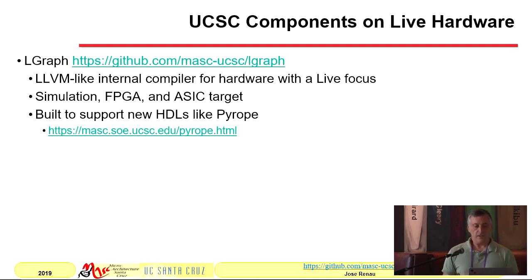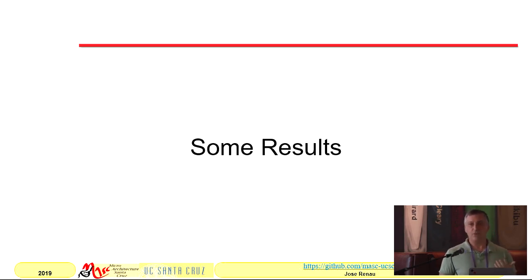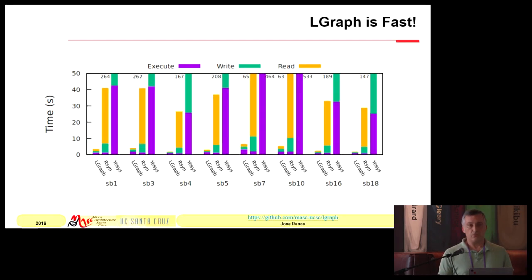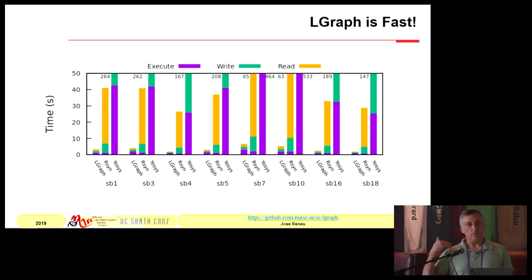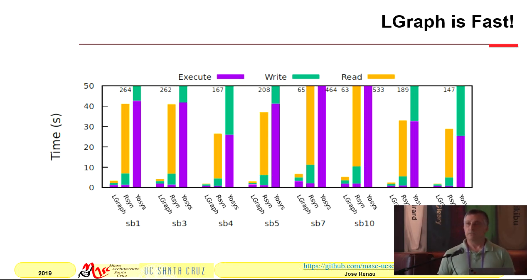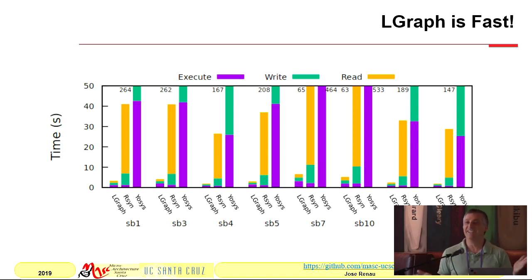So this is the general idea of L-Graph. I'm going to show some results because I think they motivate how to use the tool. We are obsessed with speed. There are several designs — we load the design, do a topological sort (which is a very typical thing when you compute timing, traversing forward on the graph), do that like 10 times, and save the results. We compare L-Graph versus Yosys versus JOSS. No need to look at the numbers — just notice one part is very short and the other part is very big. It's much faster.